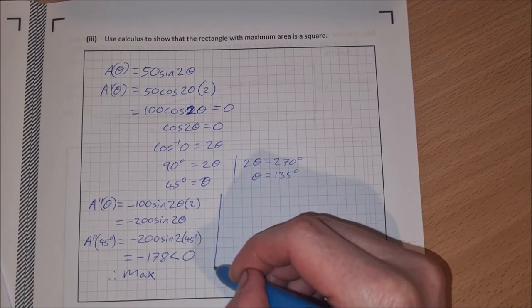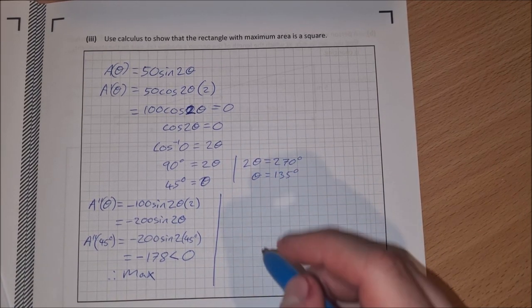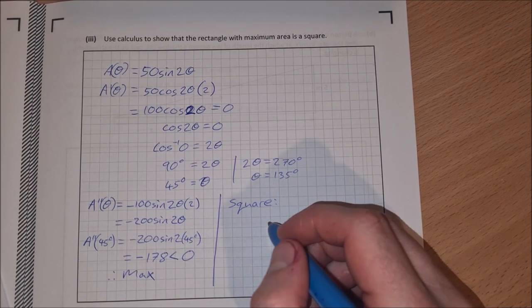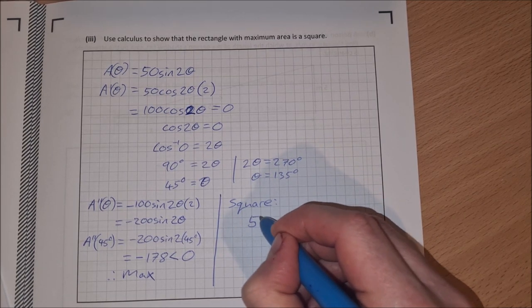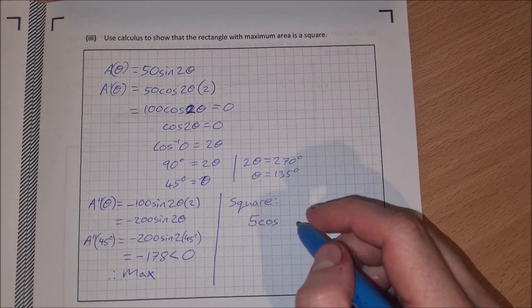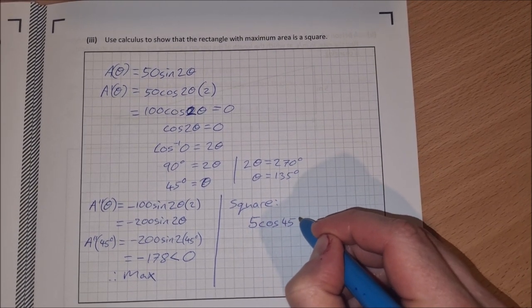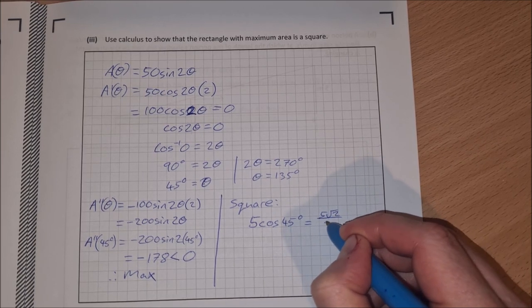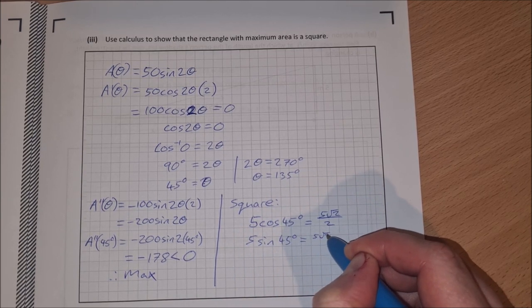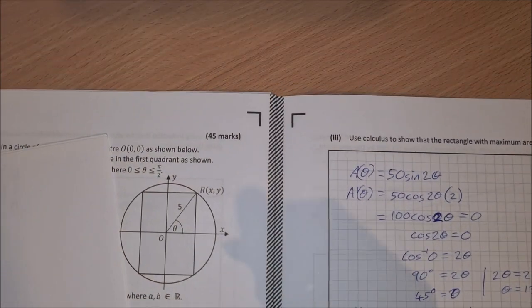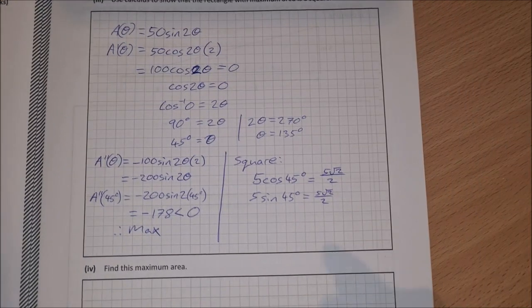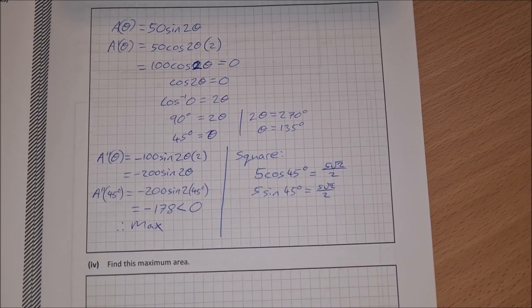Then just to show that it's a square, just because I'm not sure if we've shown enough yet. So to show that it's a square, just going to take the length of each side. So 5 cosine 45 is equal to 5 root 2 over 2. And 5 sine 45 degrees is also equal to 5 root 2 over 2. So we can see that this length here is equal to this length here. So twice it is equal to twice it. So it is a square. So we can say that's enough there to say that it is a square.